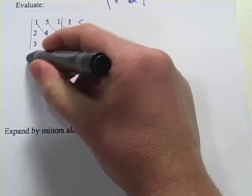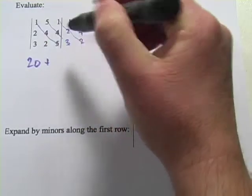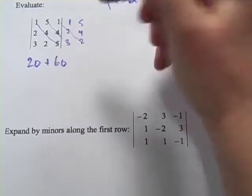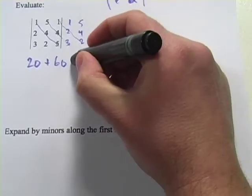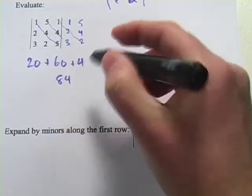1 times 4 times 5, that's 20. Plus, remember, all the down diagonals you're going to add. 5 times 4 times 3, that's 20 times 3, or 60. And 1 times 2 times 2, that's 4. So there's my down diagonals that I've added up. And actually, let's just go ahead and put those together. That's 84.